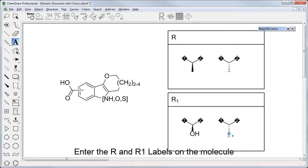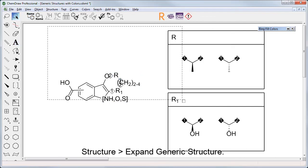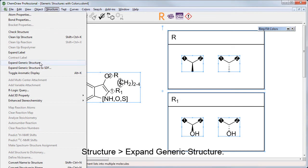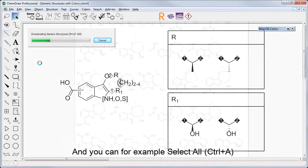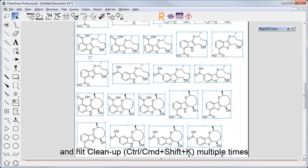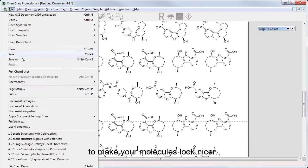You enter the R and R1 labels on the molecule. You select Molecule and Tables, Structure, Expand Generic Structure, and then you can, for example, select All, Ctrl-A, and hit Cleanup multiple times to make your molecules look nicer.